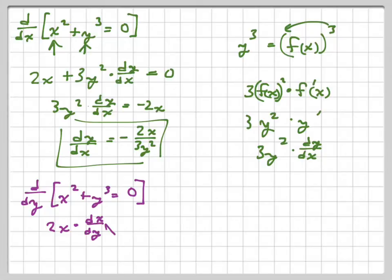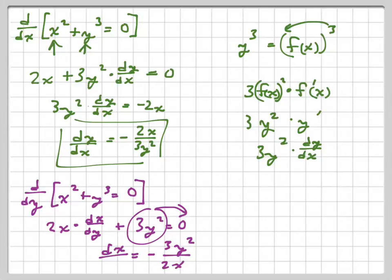Plus, now we have 3y squared. Okay? Then we'd have to solve for dx over dy. So you would subtract 3y squared from both sides, and then you divide by 2x, so it's going to be negative 3y squared over 2x equals dx over dy.